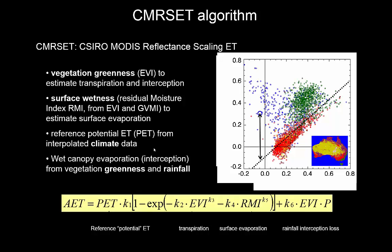One problem with NDVI is that it doesn't respond to water. If you have water at the surface you get very high evaporation rates and you want to know about those. So an algorithm we developed combines a greenness measure — the EVI, which works a little better than NDVI — with a wetness index (GVMI), an index closely related to surface wetness and open water presence. It's still essentially a crop factor approach: you multiply by the reference evapotranspiration. We also added a term to estimate rainfall interception — the evaporation from a wet canopy — which is not normally captured in the crop factor approach.